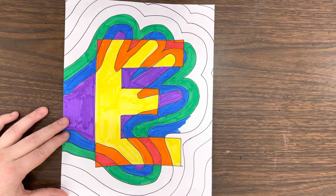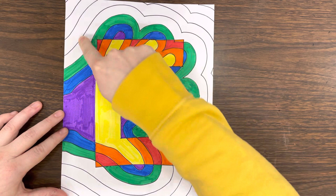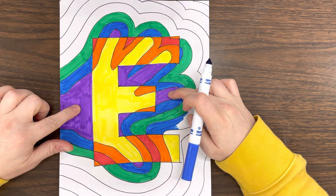And then on the outside, as you can see, are my cool colors. So now I am only coloring the lines that are outside of my letter E. Right now I am working on blue. But first, I finished my hand print in purple.